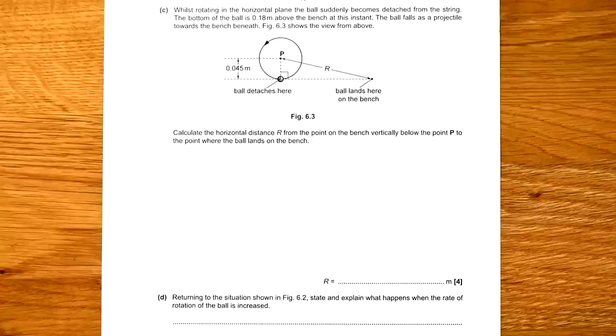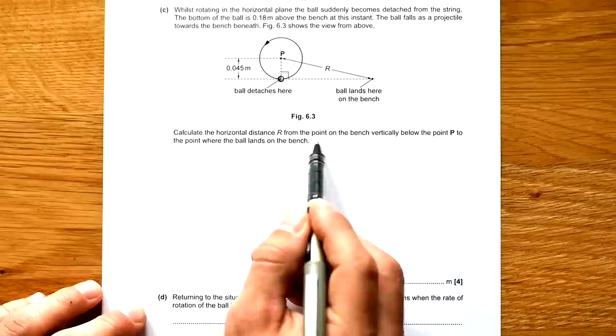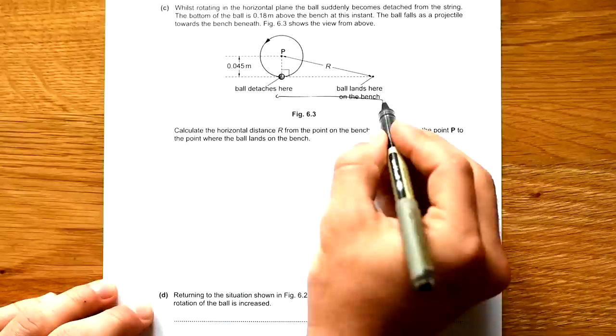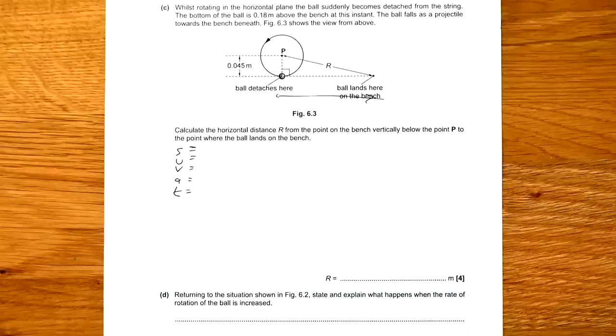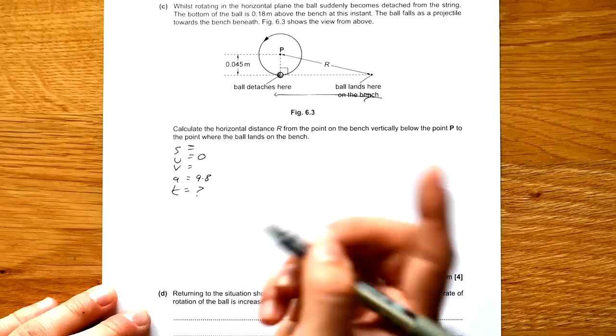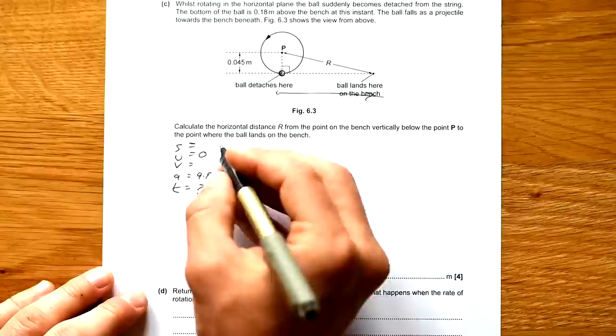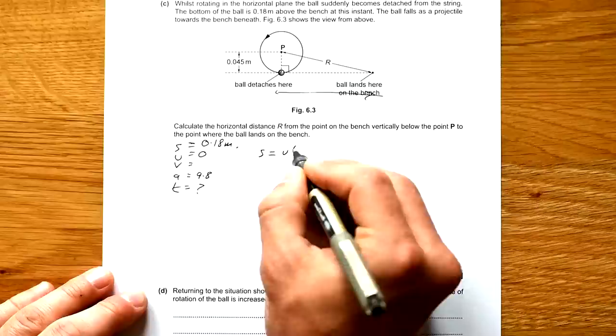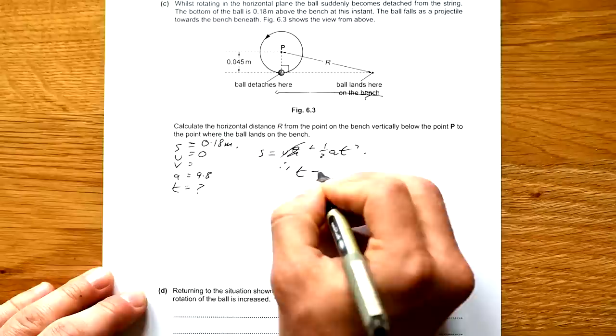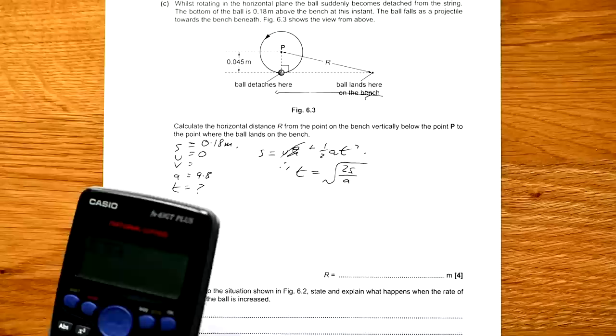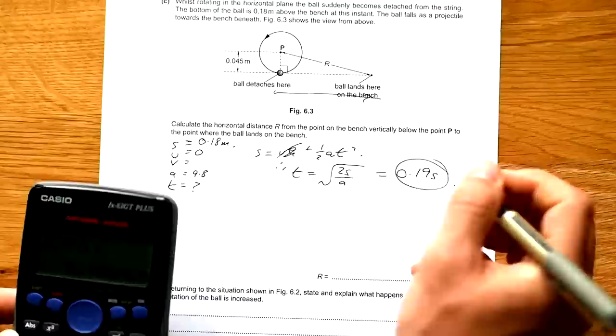We're looking for extension 2. So let's just flip everything on its head. We end up with X2 equals X1 F2 over F1. So 0.05 times 1.3 divided by 1.2. That gives us 0.054 meters. Part C: Whilst rotating in the horizontal plane, the ball suddenly becomes detached from the string. The bottom of the ball is 0.18 meters above the bench at this instant. The ball falls as a projectile towards the bench beneath. Figure 6.3 shows the view from above. We've got to calculate the horizontal distance R from the points on the bench vertically below the point P to the point where the ball lands on the bench. We're looking for this distance here. So we need to use suvat. We need to find out how long it takes to reach the ground first of all. So we're looking for that. Acceleration is 9.8. Initial speed is 0 because it is just going horizontally in a circle. And it's 0.18 meters above the bench.